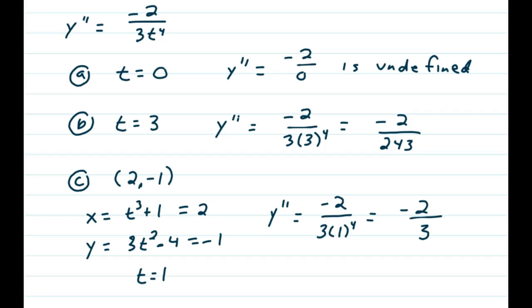So we just plug in a 1 for t. And y double prime is negative 2 over 3 times t, which is 1, to the fourth power. And the second derivative at that point, 2 negative 1, is negative 2 thirds.